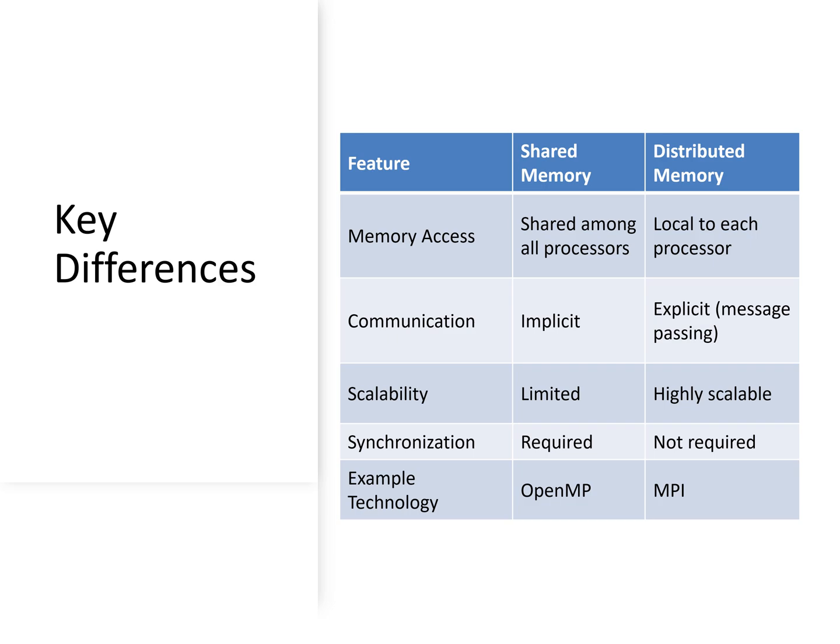In terms of scalability, shared memory is limited, while distributed memory is highly scalable — we can add thousands of processors as needed. For synchronization, shared memory requires synchronization mechanisms, whereas distributed memory does not, because every processor has its own memory. These are the example technologies we discussed earlier, OpenMP and MPI.